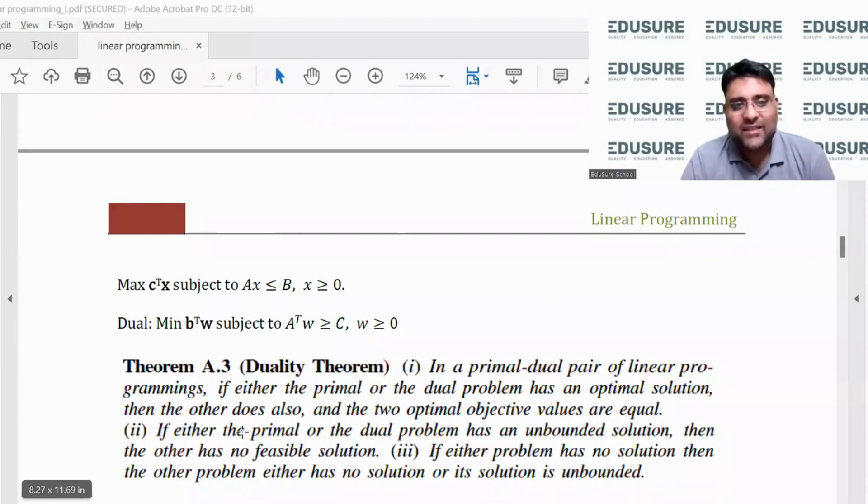Now, if either the primal or the dual has an unbounded solution, then the other has no feasible solution. What is no feasible solution? No feasible solution basically means that the basic feasible region does not exist.